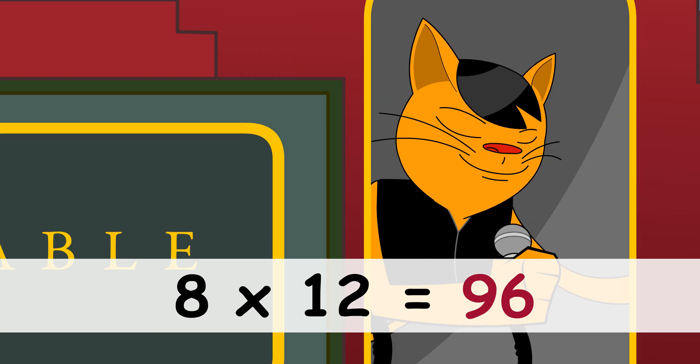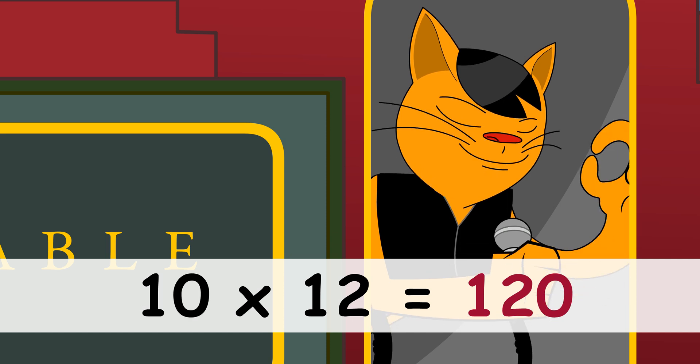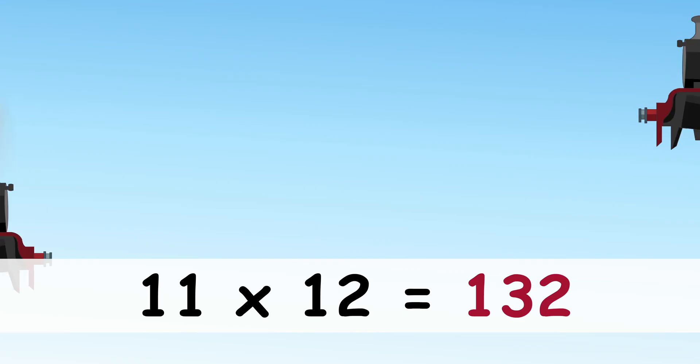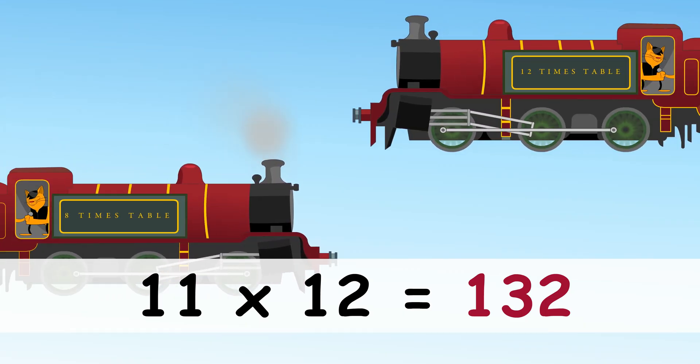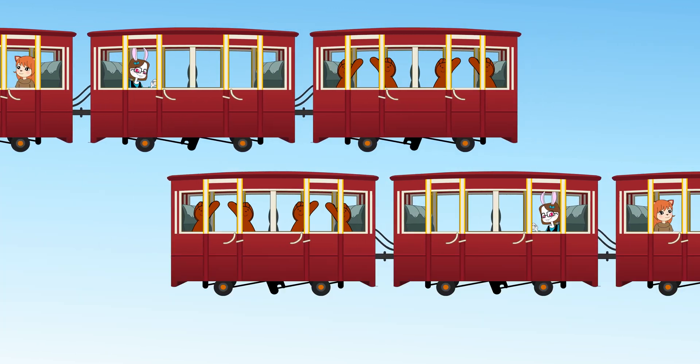8 times 12 is 96. 9 times 12 is 108. 10 times 12 is 120. 11 times 12 is 132. 12 times 12 is 144.